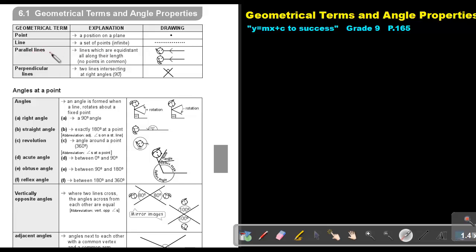What is parallel lines? Lines which are equal distance all along their length. So that distance between them stays the same, and there's no point common, so they're never going to intersect. Perpendicular lines: two lines intersecting at right angles. So if they intersect and there's forming a 90 degree angle, then it's a perpendicular line.